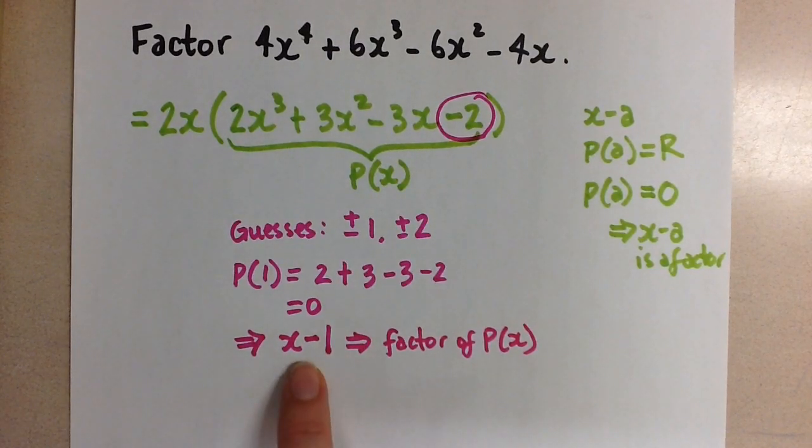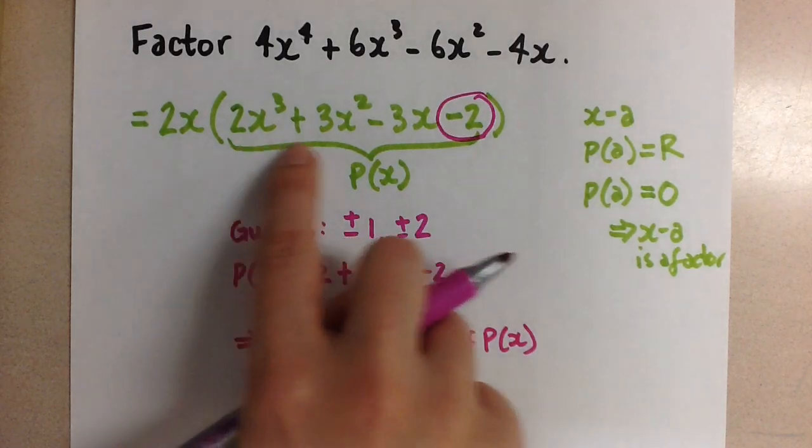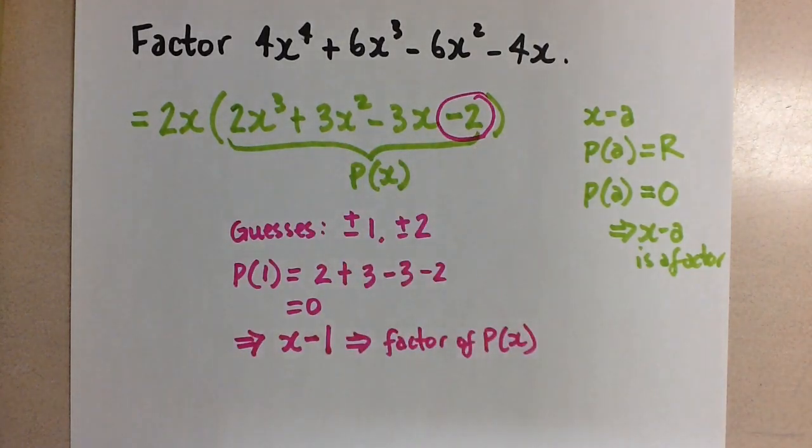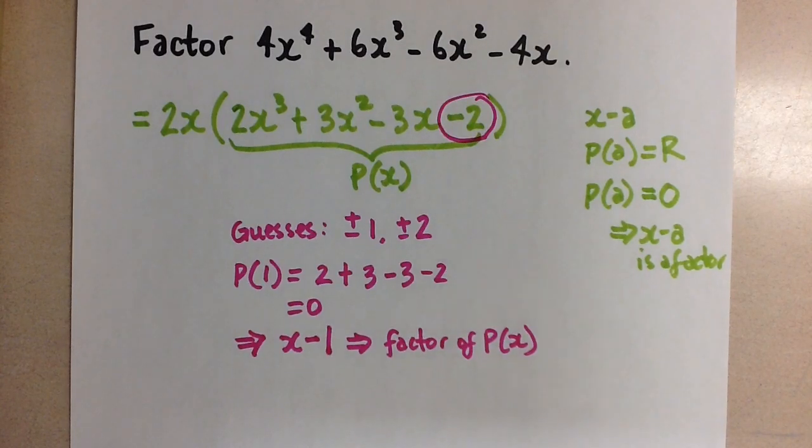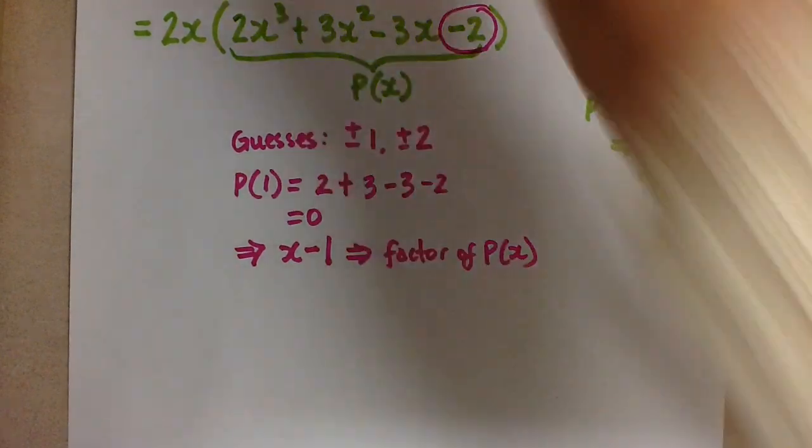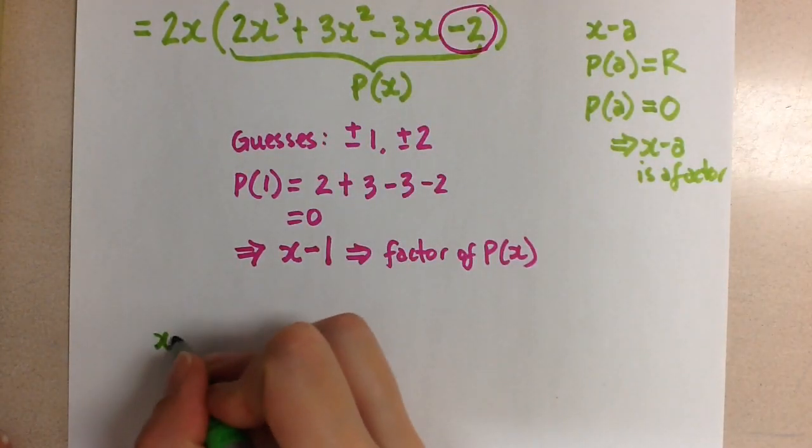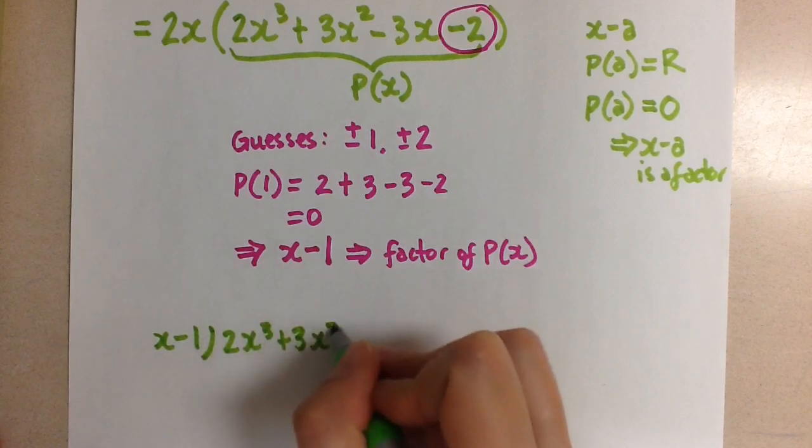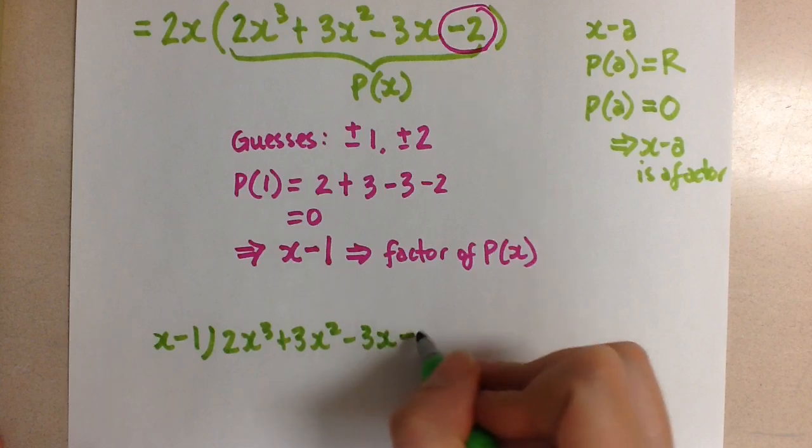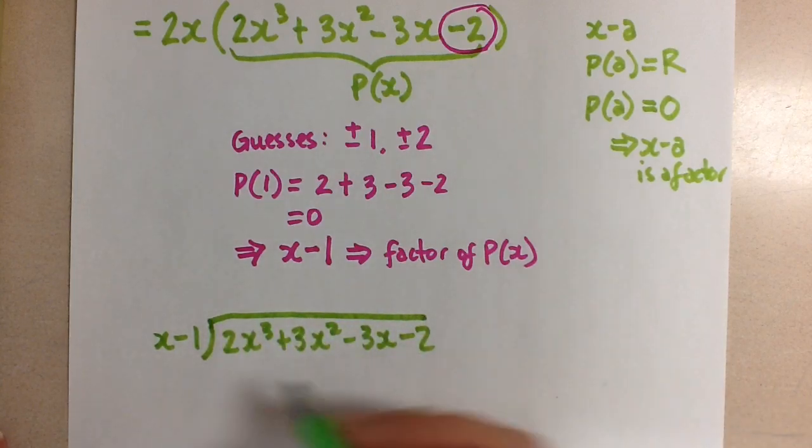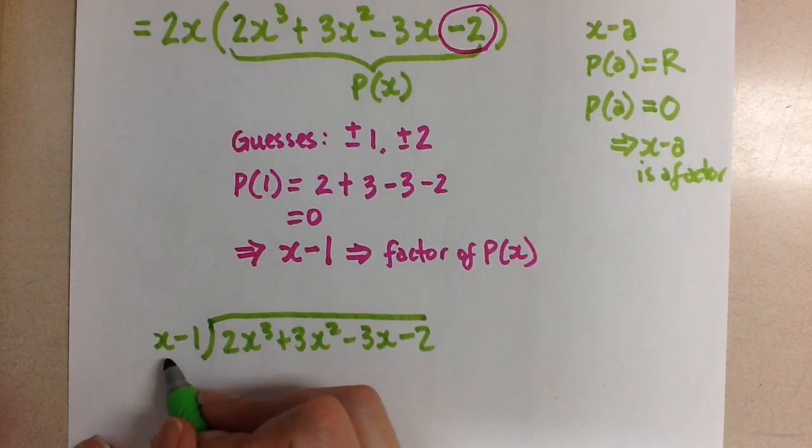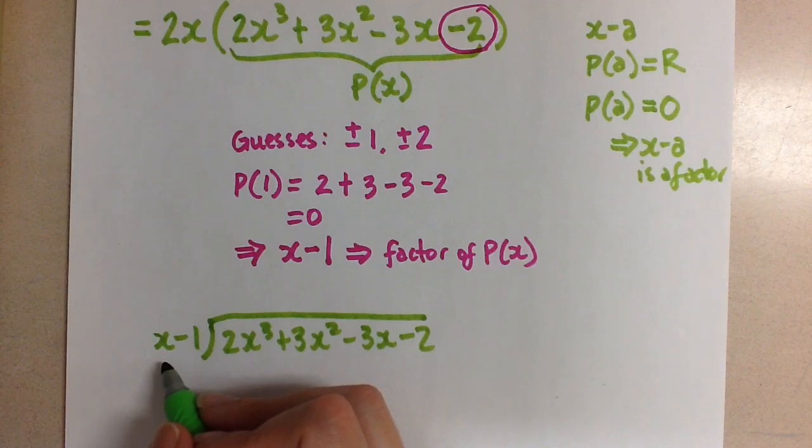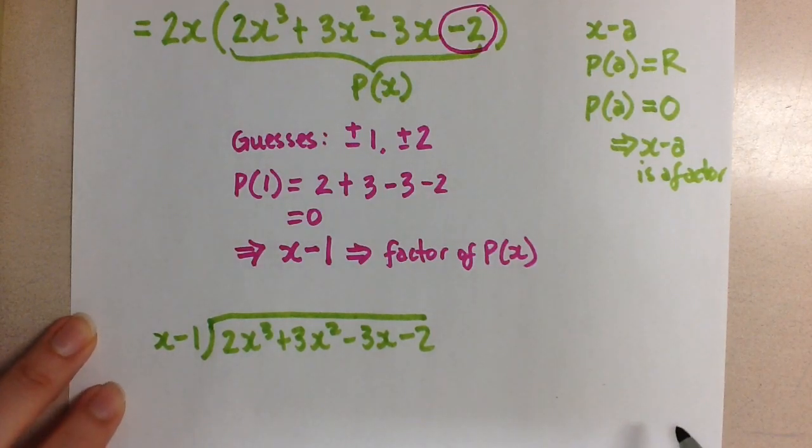So if we know it's a factor, we know that we can divide x minus 1 into that polynomial, and we should get a remainder of 0, and then the quotient will be the other factor. So let's go ahead and do that long division. X minus 1 into 2x cubed plus 3x squared minus 3x minus 2. And we'll do the long division here quickly. If you need to remind yourself of the long division of polynomials, then go to my previous video.